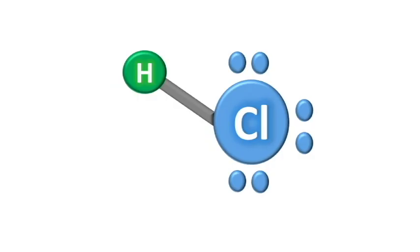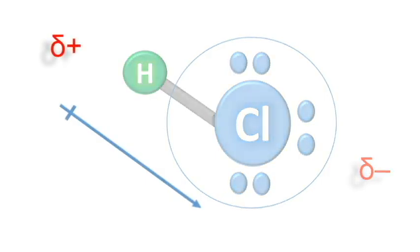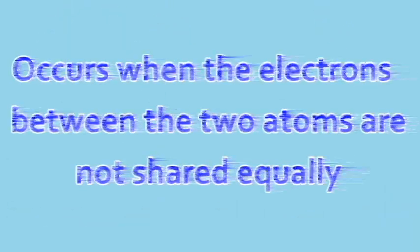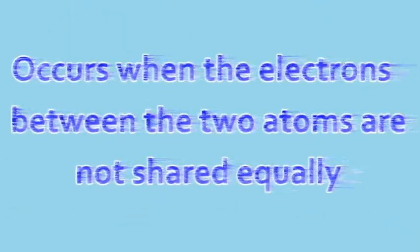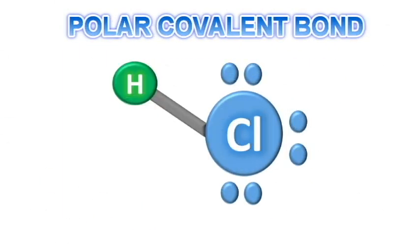There are so many more electrons surrounding chlorine. Chlorine is a big molecule and has a very high electronegativity compared to hydrogen. Because of this, the electron cloud tends to shift more towards chlorine. The chlorine side of the molecule will have a slightly negative charge, and the hydrogen side will have a slightly positive charge. A polar covalent bond occurs when the electrons between the two atoms are not shared equally. So hydrochloric acid is held together by polar covalent bonds.